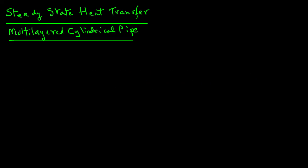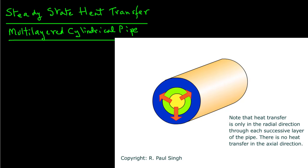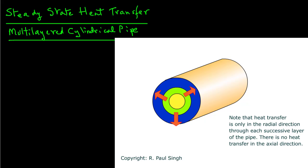In a previous module we looked at steady-state heat transfer in a tubular pipe. Now we will look at cases where you have multiple layers in cylindrical coordinates. A common example is pipes that are conveying either heated or cooled liquids, which are often insulated, so we have a situation of a steel pipe covered with insulation.